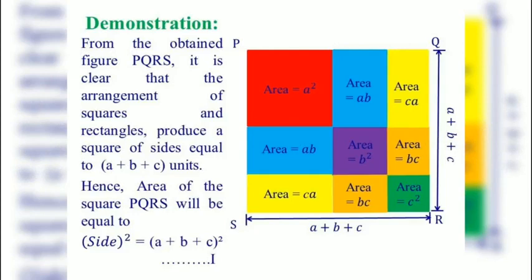Demonstration: from the obtained figure PQRS, it is clear that the arrangement of squares and rectangles produces a square of side equal to A plus B plus C units. Hence, the area of square PQRS is equal to A plus B plus C whole square, that is side squared.